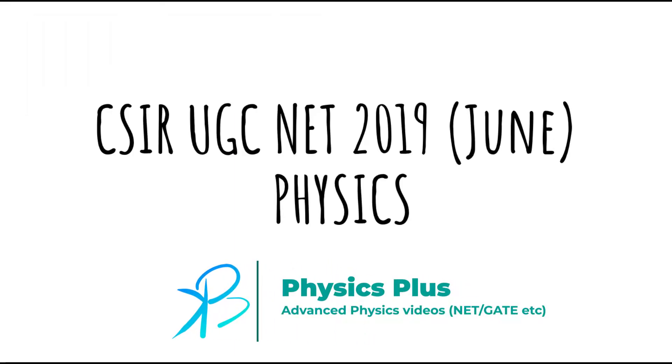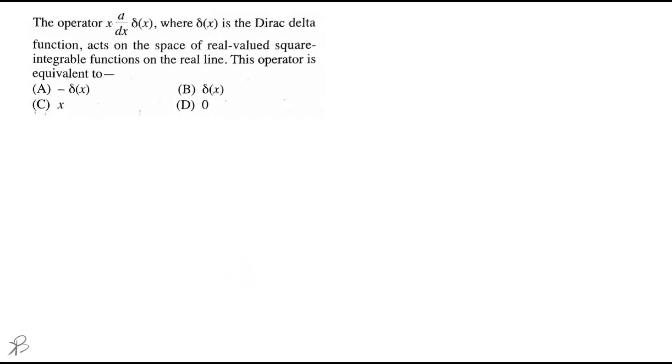Hello and welcome back to another problem. This problem is from CSR UGC NET 2019 June Physics. The problem goes something like this: we have an operator x d/dx δ(x), where δ(x) is the Dirac delta function.